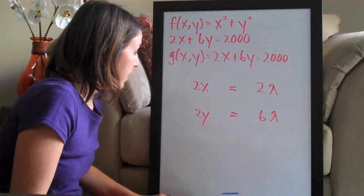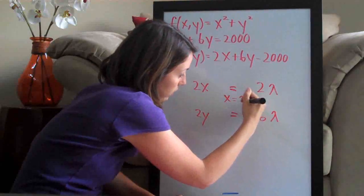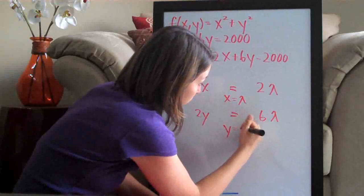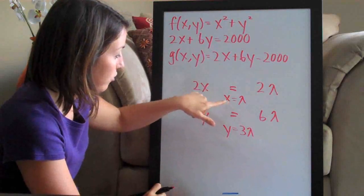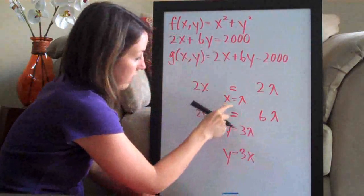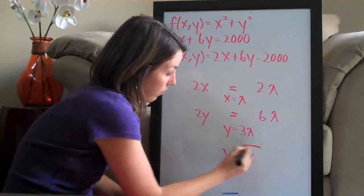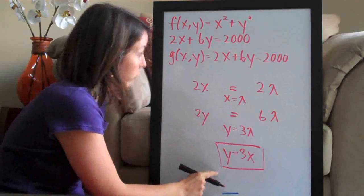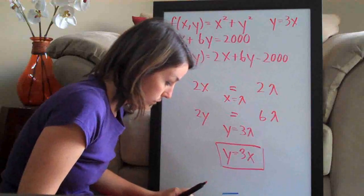Simplifying the first equation by dividing both sides by 2 gives x = λ. Dividing the second equation by 2 gives y = 3λ. Since x = λ, we can substitute x in for λ and get y = 3x. This relationship between y and x is exactly what we need for the next step.